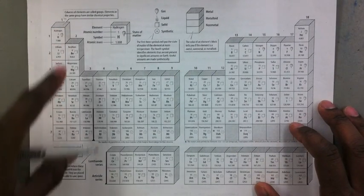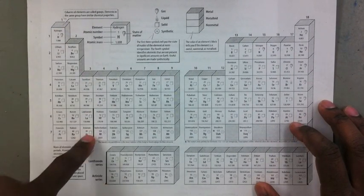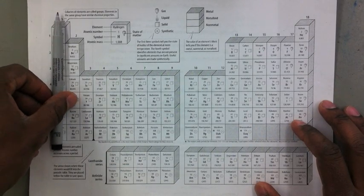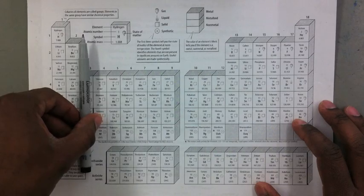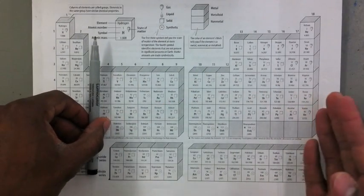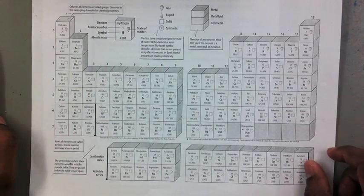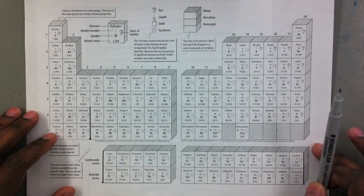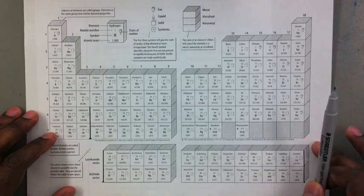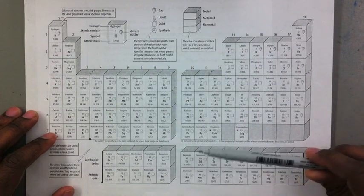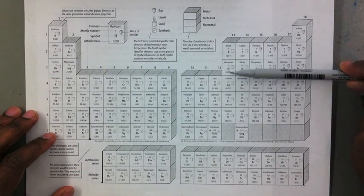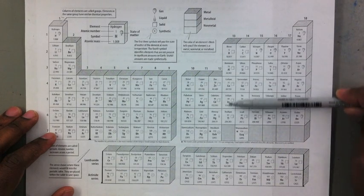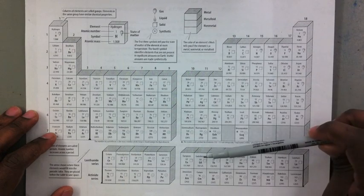So we have vertical groups of elements. As you can see, there's eighteen. It goes group one, two, group three, four, five, all the way over to group eighteen. Elements in the same group have similar properties, meaning they behave similarly in chemical reactions. So for example, boron, aluminum, gallium, and indium are all in the same group. Therefore, they have similar properties.